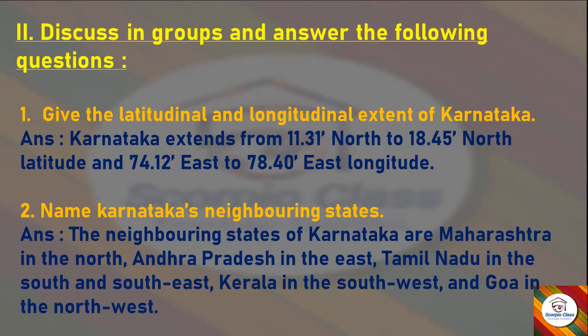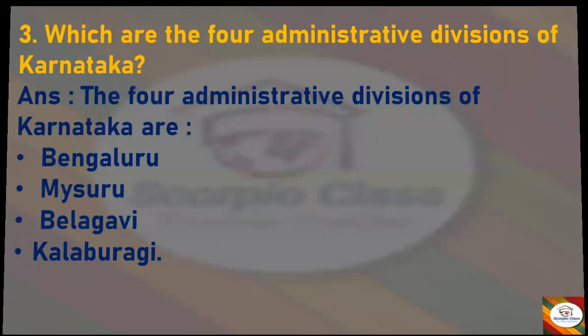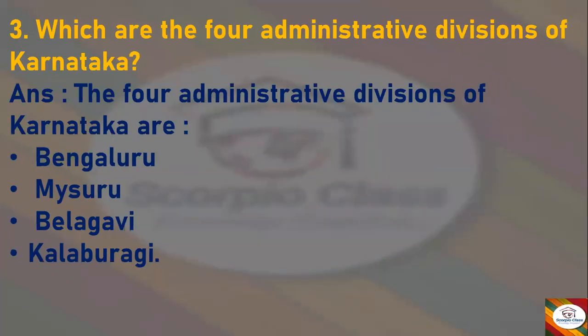Next question: Name Karnataka's neighboring states. Answer: The neighboring states of Karnataka are Maharashtra in the north, Andhra Pradesh in the east, Tamil Nadu in the south and south-east, Kerala in the southwest, and Goa in the northwest.